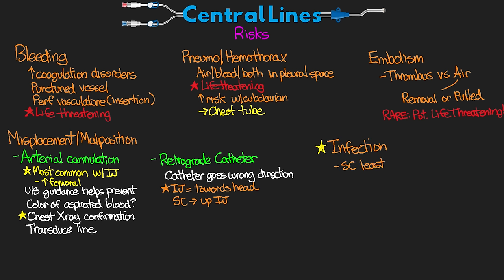Finally, the last risk I want to talk about is one of our most common and concerning complications: infection. Our subclavian line has the least risk for infection as it's far away from any contamination sources. The IJ has a higher risk of contamination because it's closer to oral and gastric secretions and it's in an area where it can come into contact with more things. Our femoral line has the highest risk for infection generally — this is a dirty area that we try to avoid, and a lot of this has to do with it being close to the perianal area.